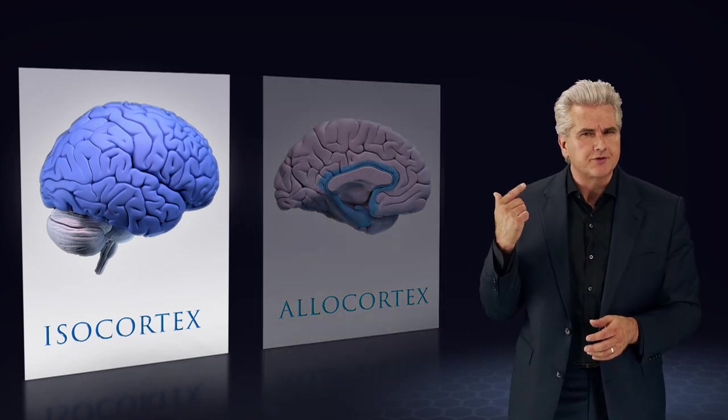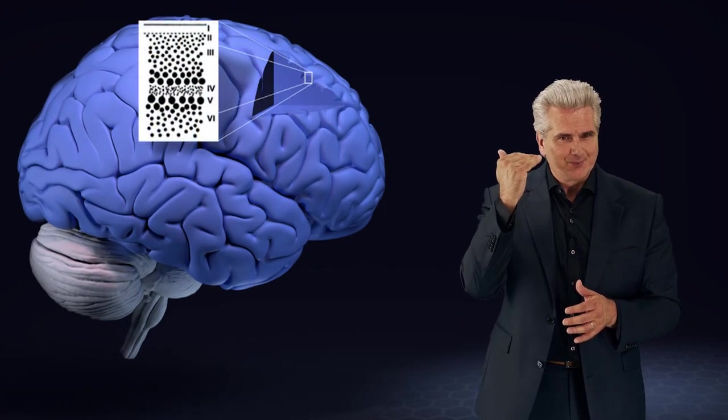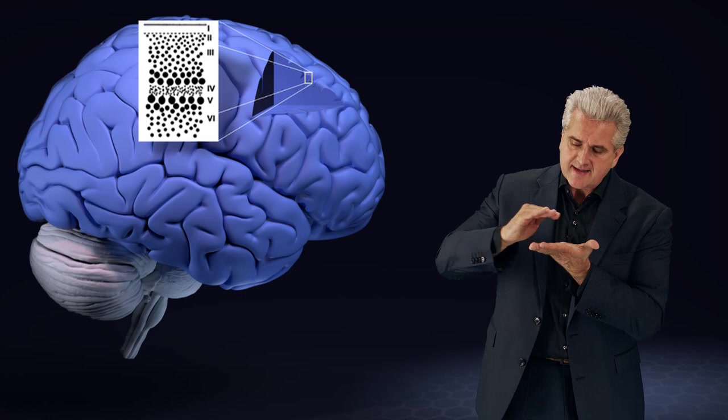The isocortex, which represents over 90% of the cortex, is characterized by its six-layered structure. It is made of six layers.